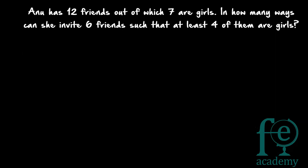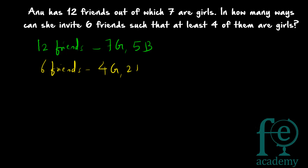Second question: Anu has 12 friends, of which 7 are girls and 5 are boys. She wants to invite 6 friends such that at least 4 of them are girls. 'At least 4 girls' gives three possibilities: 4 girls and 2 boys, 5 girls and 1 boy, or 6 girls and 0 boys. We calculate the number of ways for each case and then add them together.